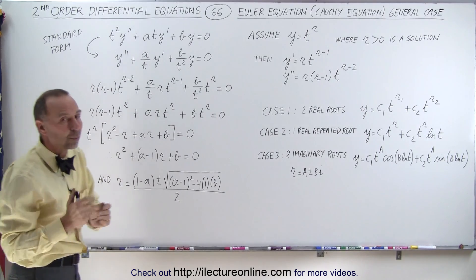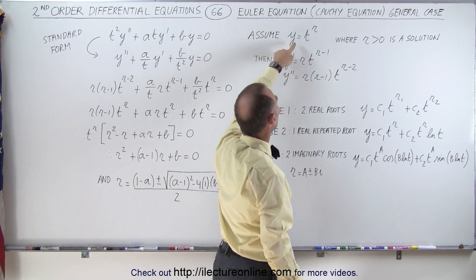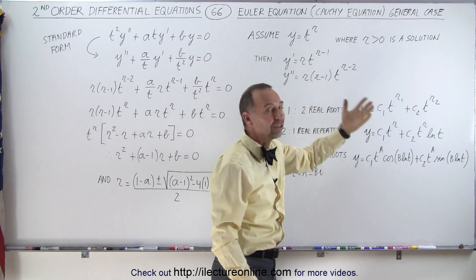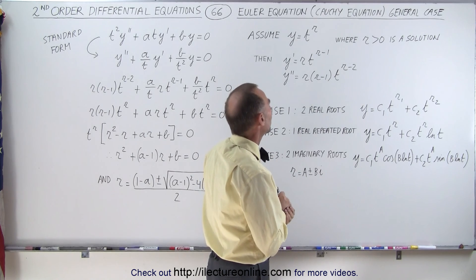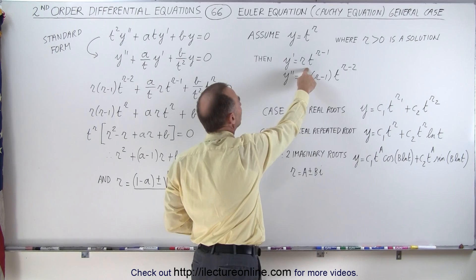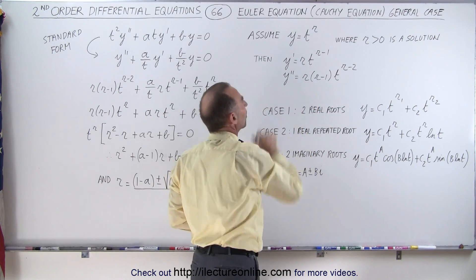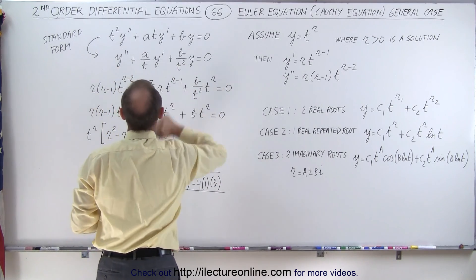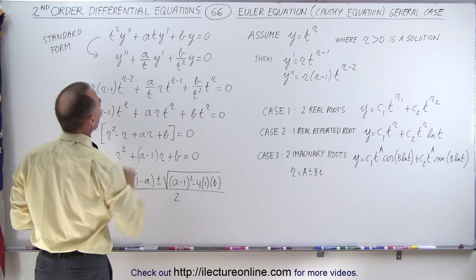We're going to assume a solution of the form y equals t to the r, where r is greater than zero. If we take the first derivative we get r times t to the r minus 1, and the second derivative follows from that. We plug those back into the standard form of the equation, which gives us the following equation.